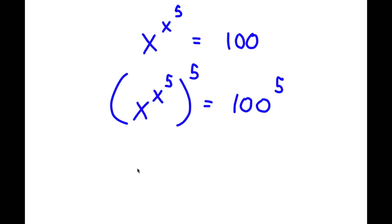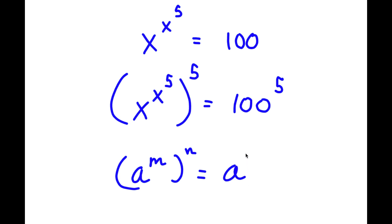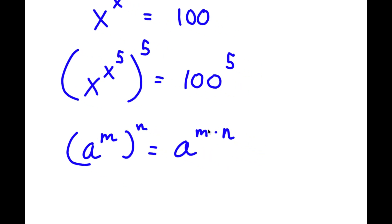Now, if I have something in the form a to the power of m to the power of n, this is the same thing as a to the power of m times n. In m and n, you can change the place of these two, so this is the same thing as a to the power of n times m.